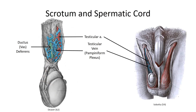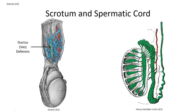That leaves one final structure to talk about: the ductus or vas deferens. This is a thick muscular tube with a relatively small lumen, easy to identify by feel during dissection as it has remarkable rigidity — it feels like a strand of fine gauge wire between your fingers. It's nourished by the testicular artery off the internal iliac and has a rich sympathetic nerve supply which stimulates peristaltic contractions of the muscle during ejaculation.